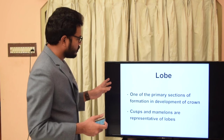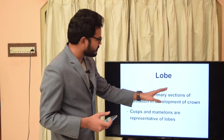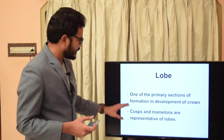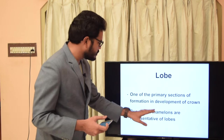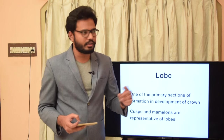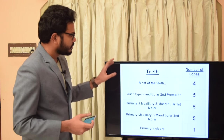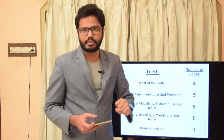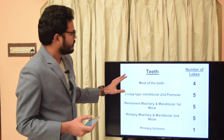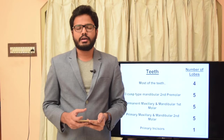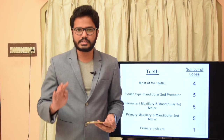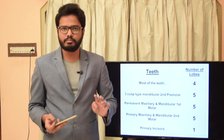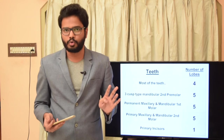A lobe is one of the primary sections of formation and development of the crown — the cusps and mamelons are representatives of lobes. Most teeth in the oral cavity develop from four lobes, which is the standard rule. The minimum number of lobes from which permanent teeth develop is four.